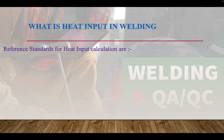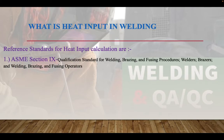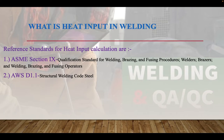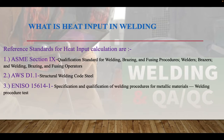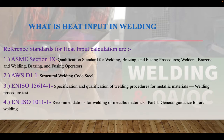The reference standards for heat input calculation are: first, ASME Section 9 — the qualification standard for welding, brazing and fusing procedures, welders, brazers and welding, brazing and fusing operators. Second, AWS D1.1, which is the structural welding code for steel. Third, EN ISO 15614-1, specification for qualification of welding procedures for metallic materials welding procedure test. And EN ISO 10111-1, recommendations for welding of metallic materials part 1, general guidance for arc welding. These are the standards from which we have taken the reference for the heat input formula and calculation.